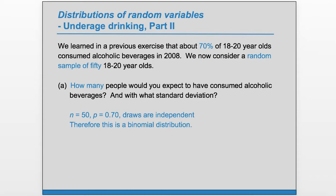And so we can use the shortcut formulas for the mean and the standard deviation of a binomial distribution that are given here, the mu and sigma. And so mu, the mean or expected value is just np, so we can just do 50 times 0.7 and get a mean of 35.